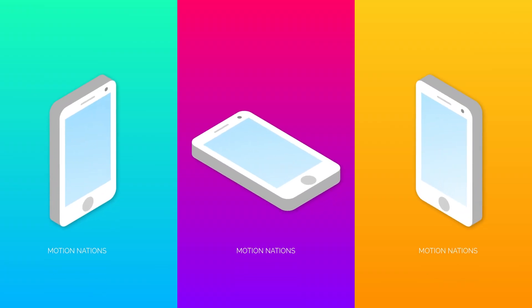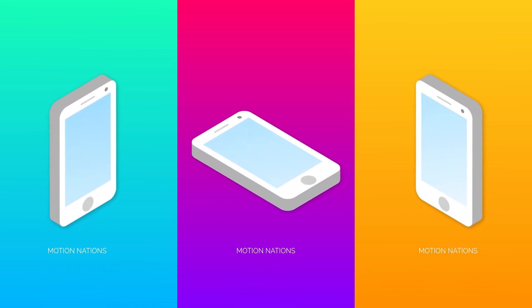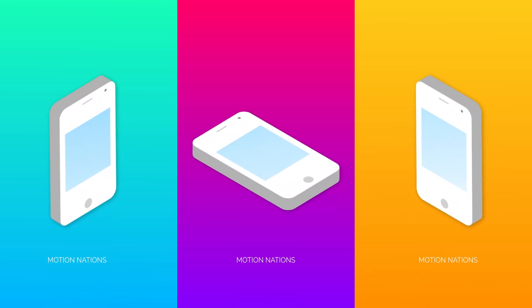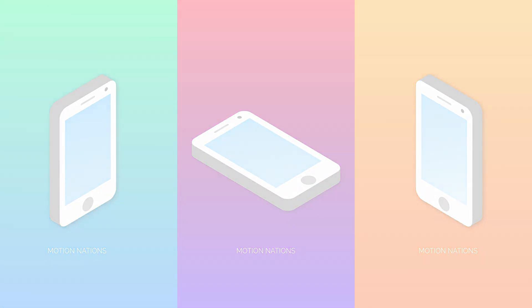Hey, what is up everyone, this is Abhishek from Motionations and welcome back to another exciting After Effects tutorial. In this video we will be learning how to create some 3D isometric cell phone animation in After Effects without using any third party plugin. You can use this technique to create and animate whatever 3D object you want — I am using a cell phone just as an example.